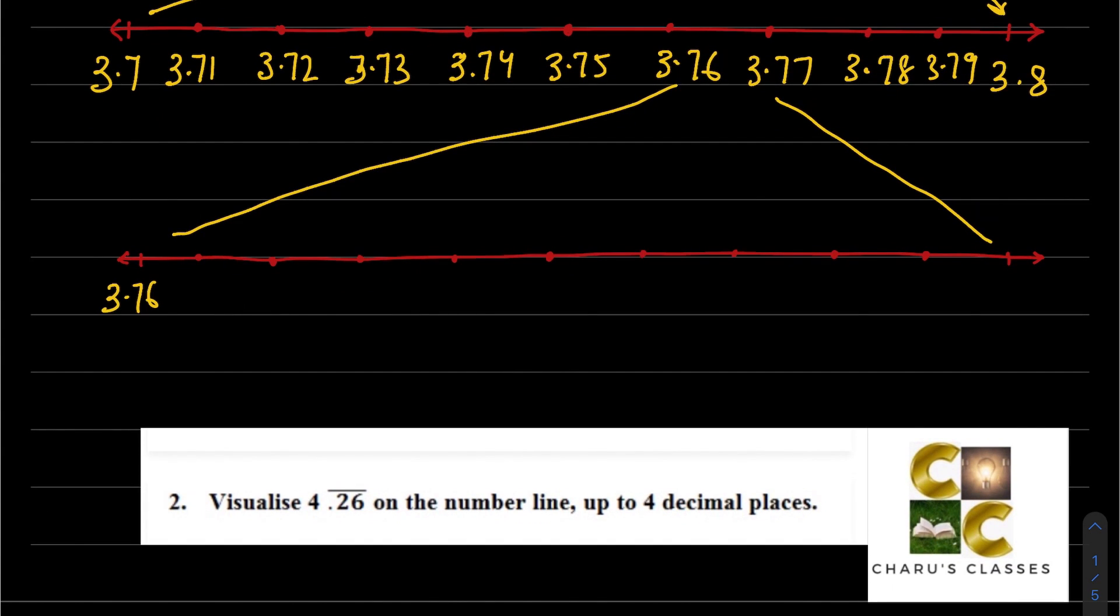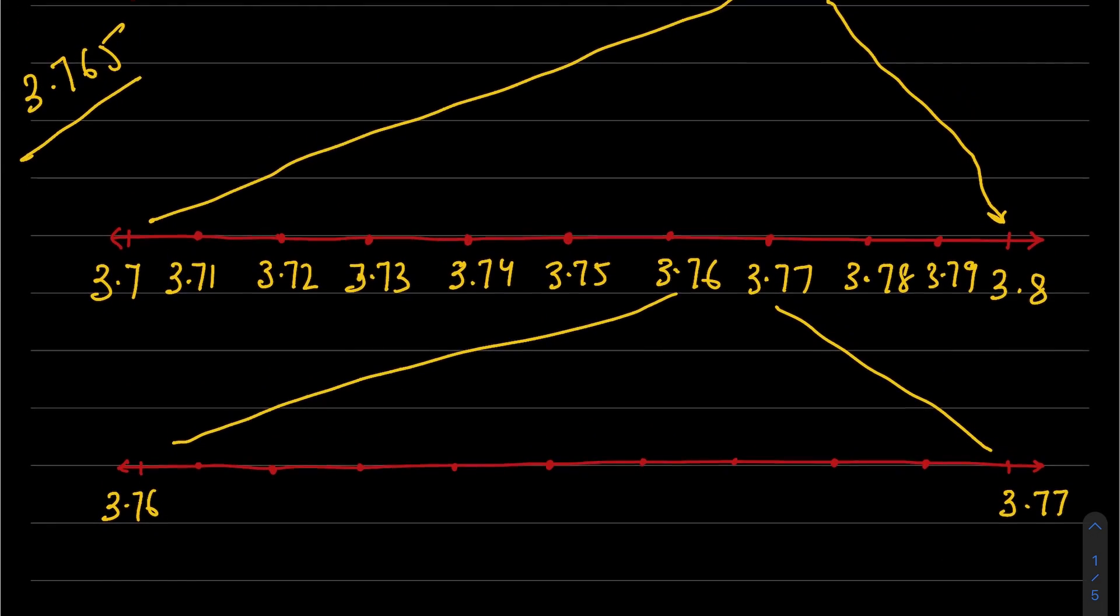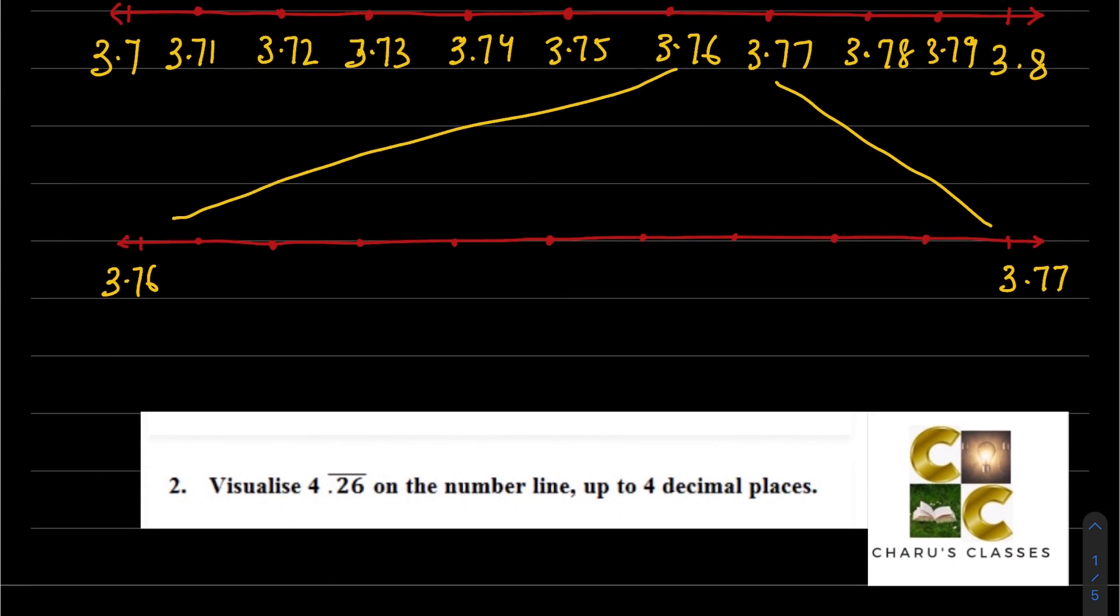Now we will magnify between 3.76 and 3.77. The numbers will be 3.761, 3.762, 3.763, 3.764, 3.765. So this is the number which we wanted.